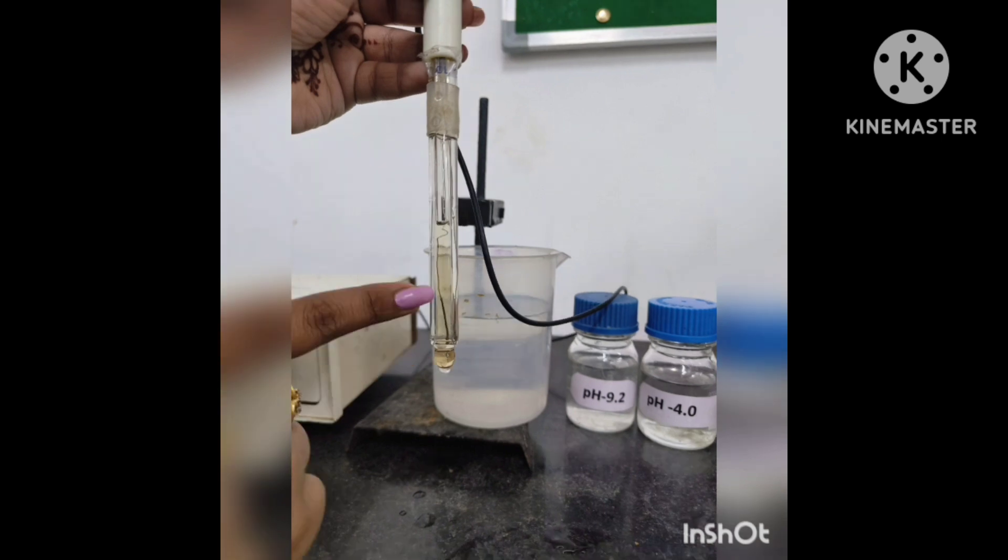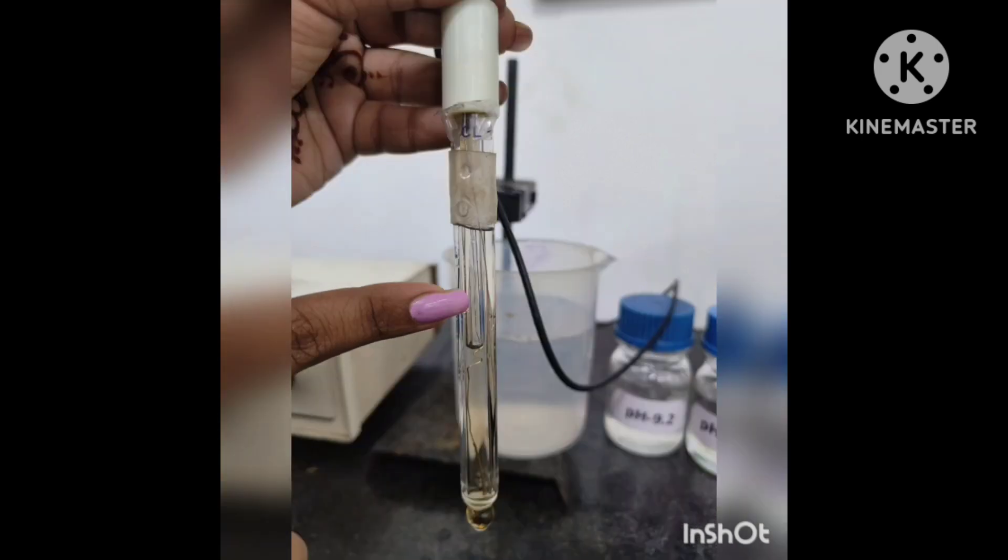The potential created at this junction between the KCl solution and the test solution is nearly zero and unaffected by anything in the solution, including hydrogen ion.